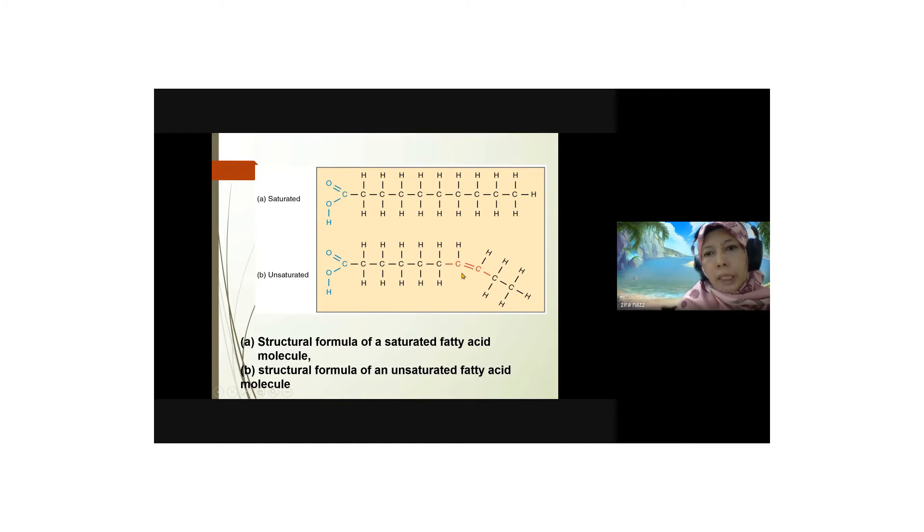It's like a V-shape because there are a lot of spaces here, so that's less hydrogen compared with the saturated. Saturated has the maximum number of hydrogen compared with the unsaturated.